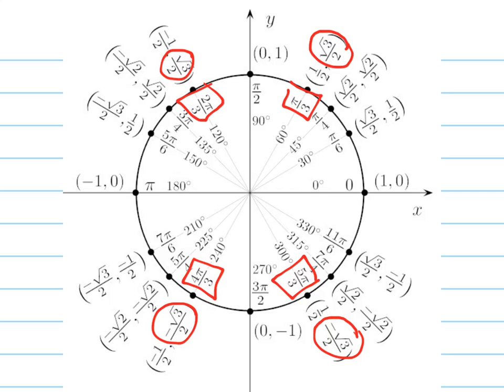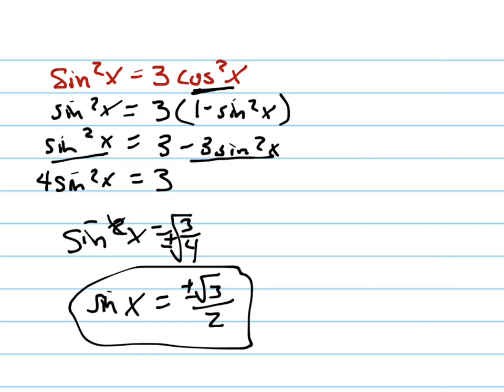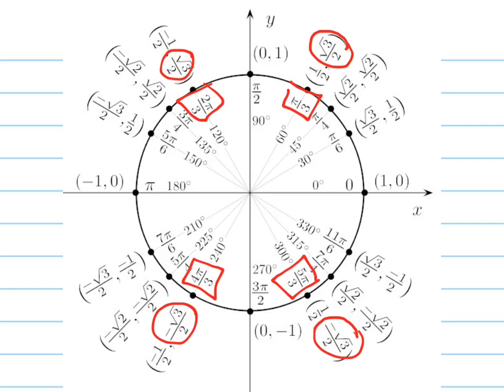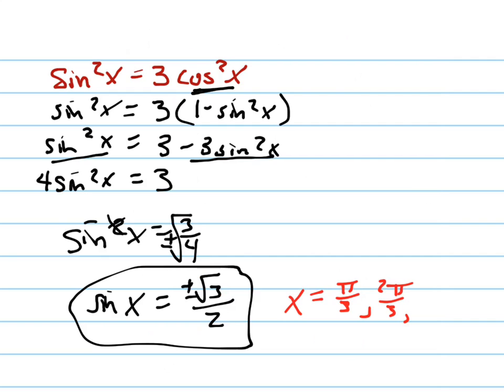Pi over 3, 2 pi over 3, 4 pi over 3, 5 pi over 3. So x equals pi over 3, 2 pi over 3, 4 pi over 3, and 5 pi over 3.